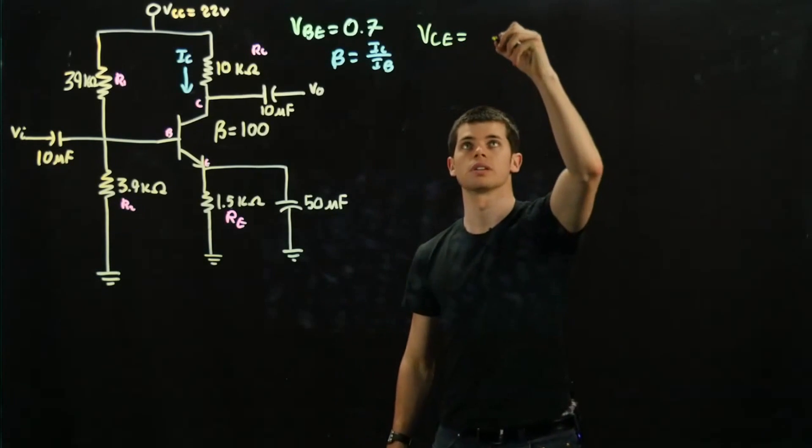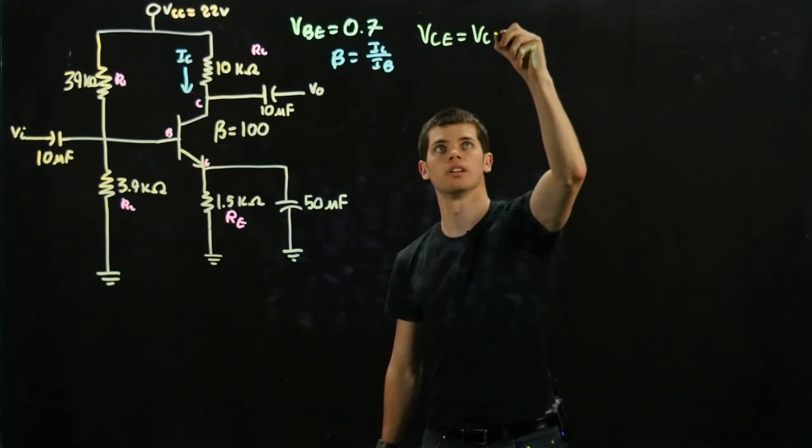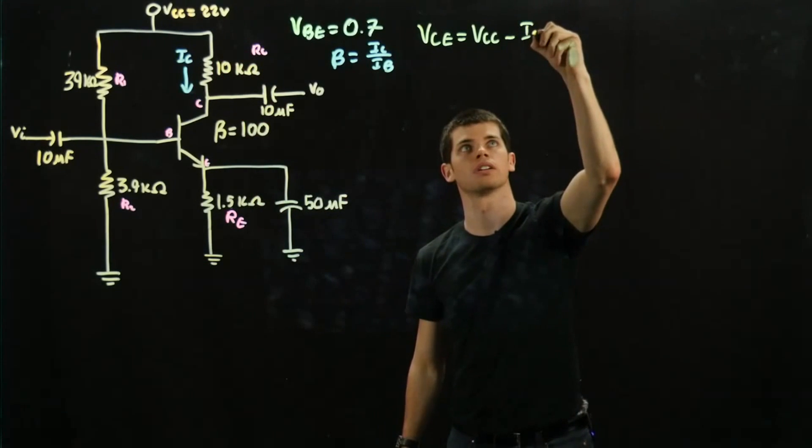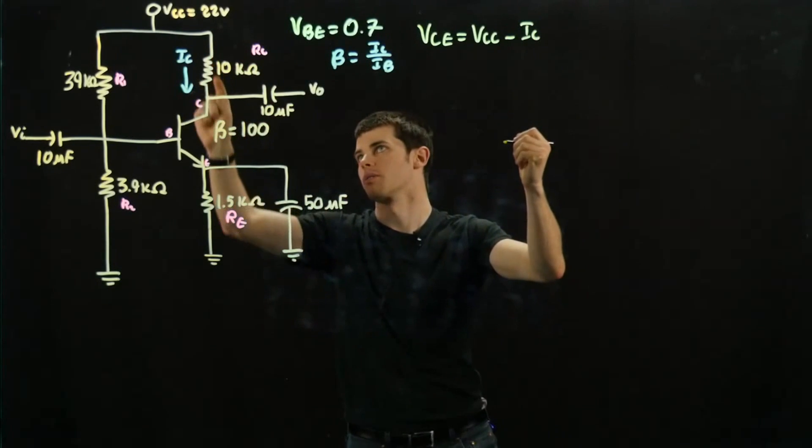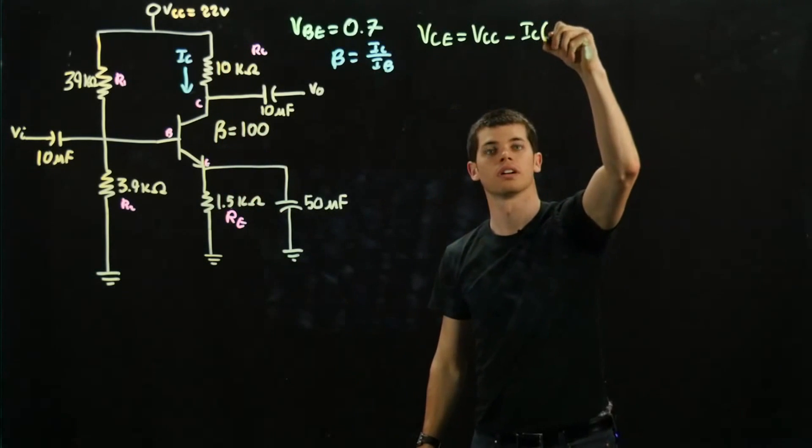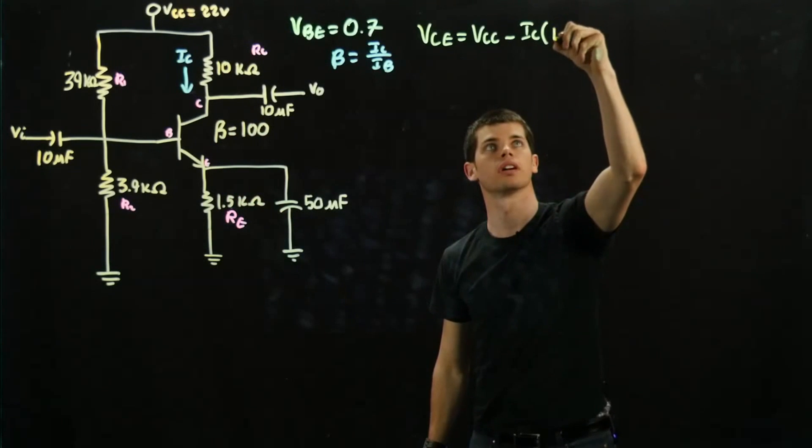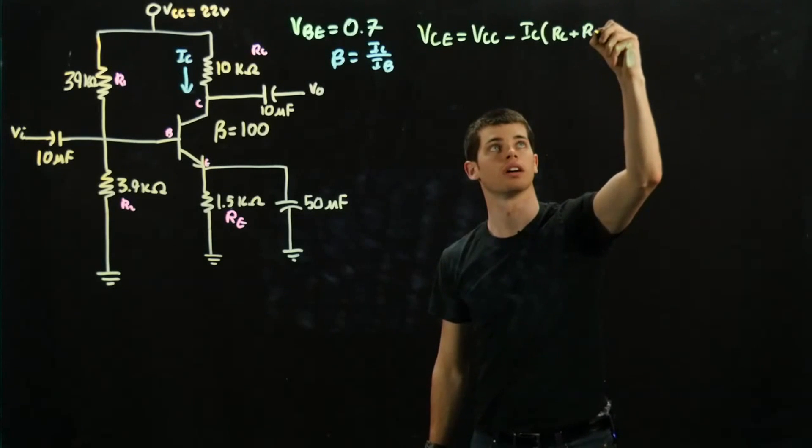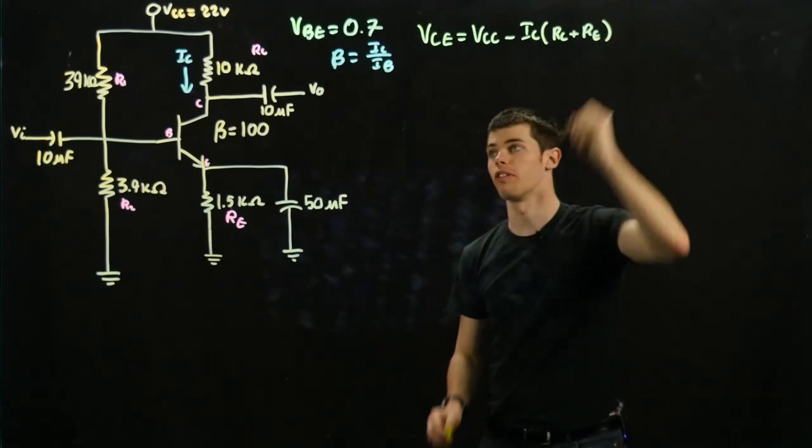is equal to VCC, our input voltage up here, minus IC, our current through RC, times RC plus RE. And now just a quick explanation of why this is.